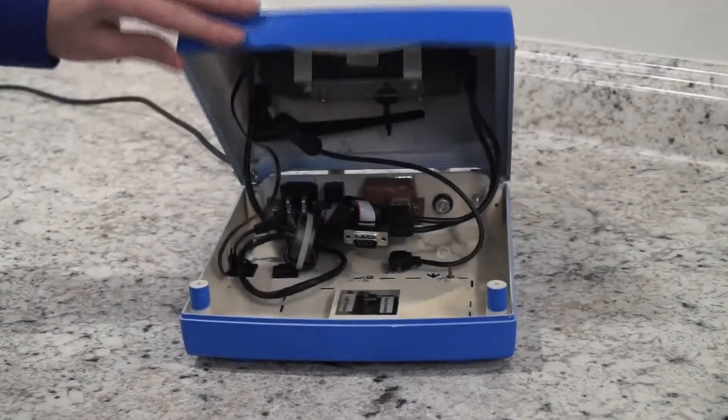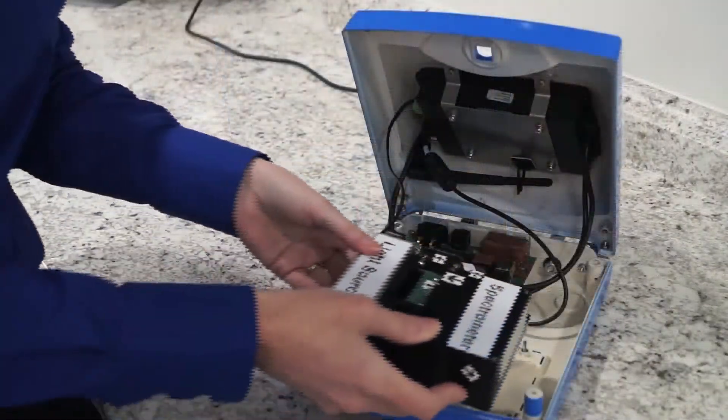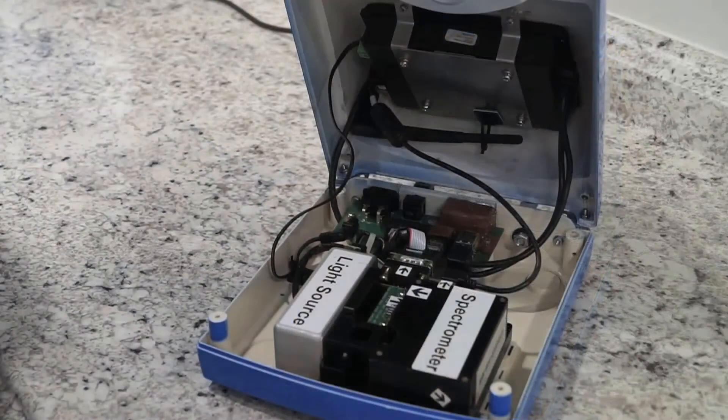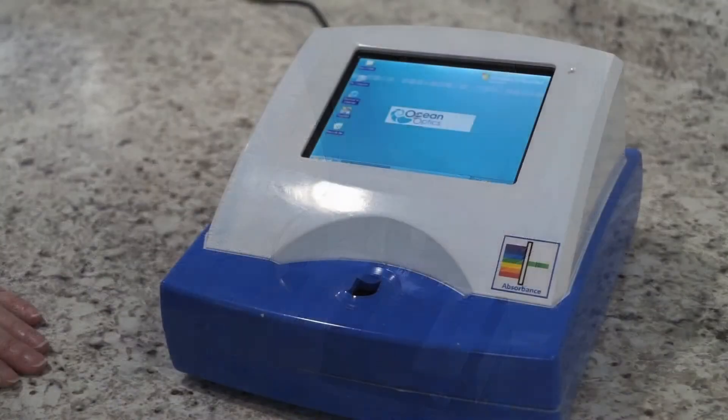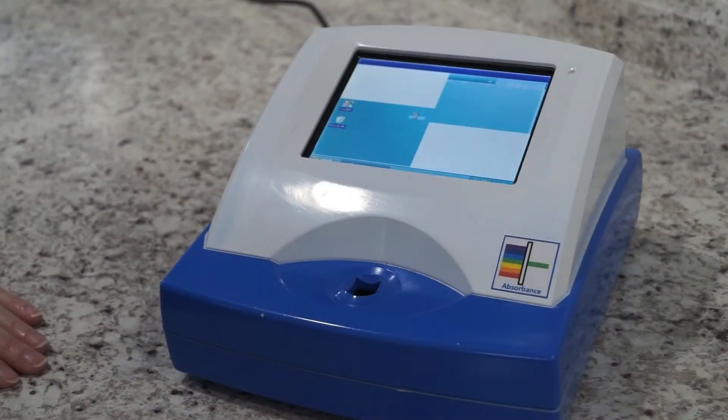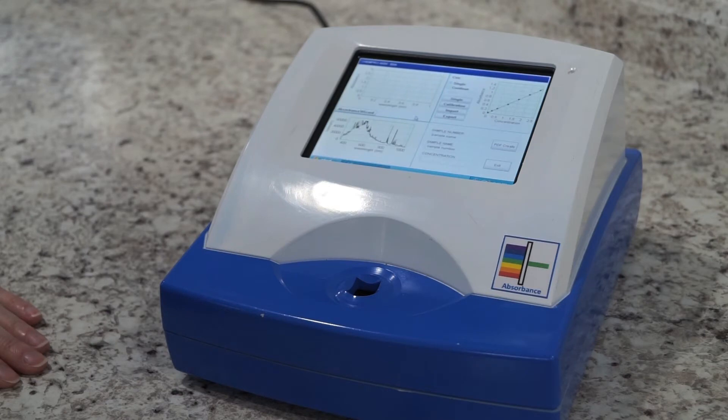At the next level of integration, a CCA is added to control the light source and spectrometer. This can be customized to include Wi-Fi or Ethernet for remote communication. Additionally, thermistors and fans may be included for temperature control.